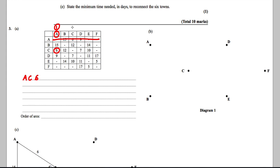C is number two. We cross out everything in the C row. Now we look down columns one and two and find the smallest value among 15, 9, 12, 7, and 10 — which is 7. So the next arc we choose is C to D, which is 7.